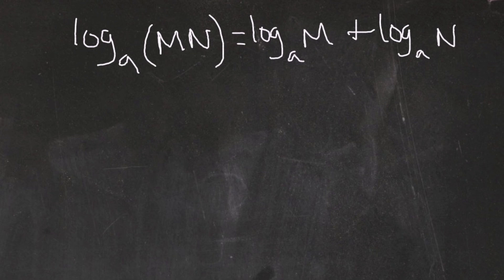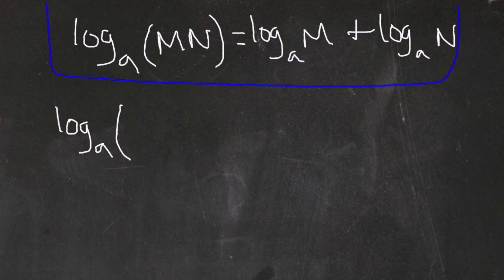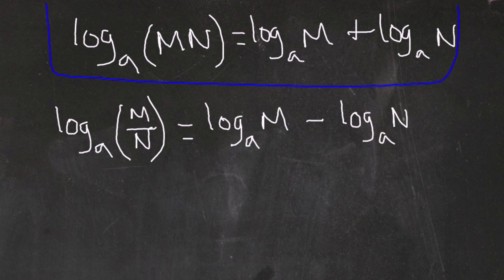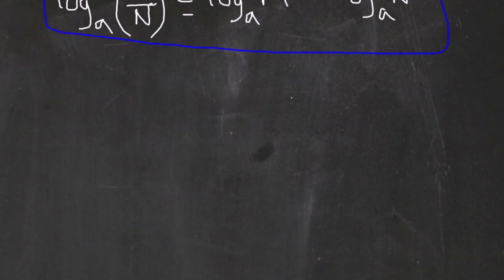The second property tells us that if we have a logarithm with base a and inside that logarithm we have a quotient — a fraction, meaning division — then we can express that single logarithm as a difference of logarithms. We take the numerator M in one logarithm and subtract the logarithm of the denominator, and both logs must have the same base a.